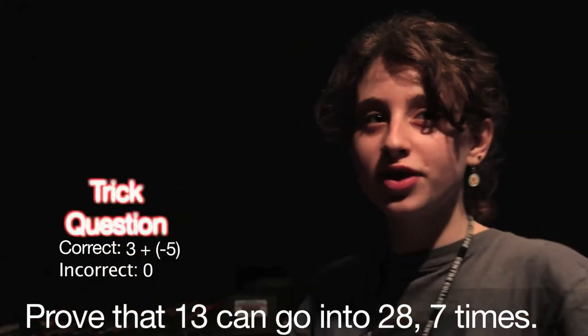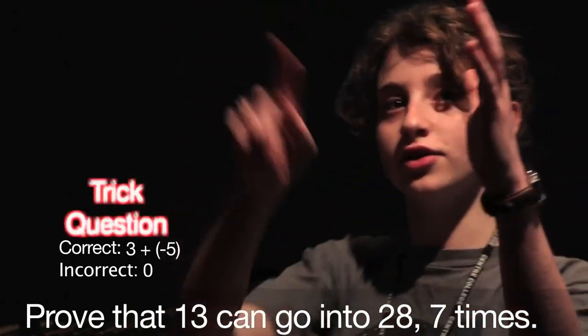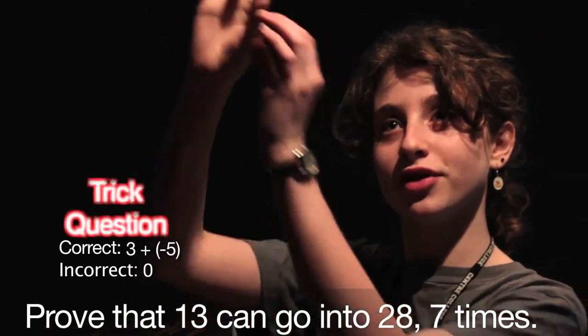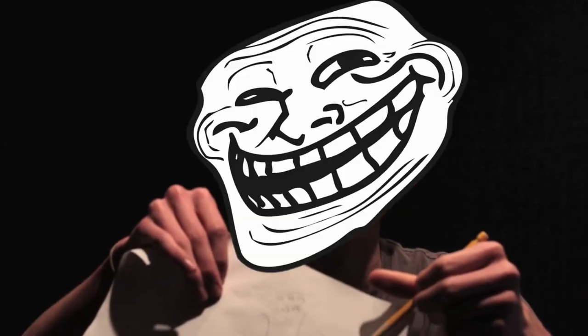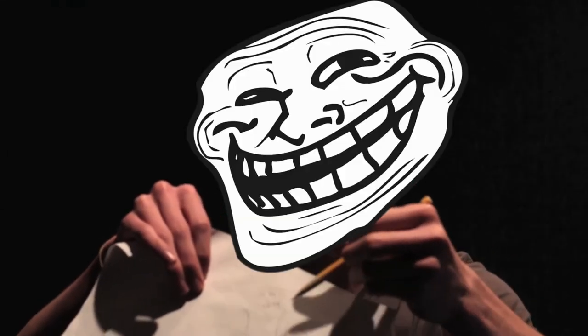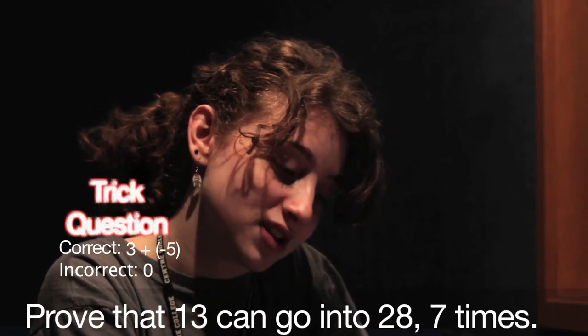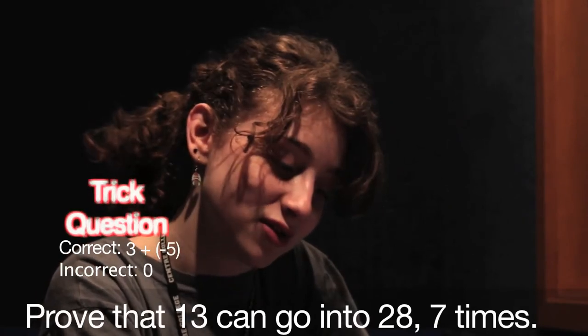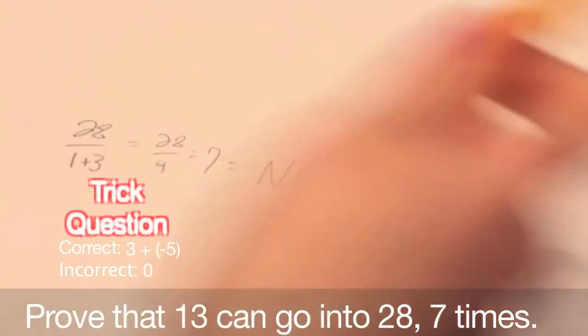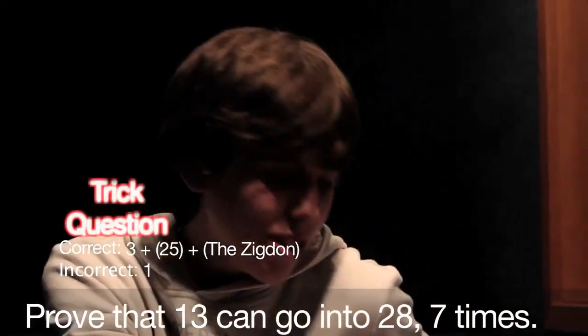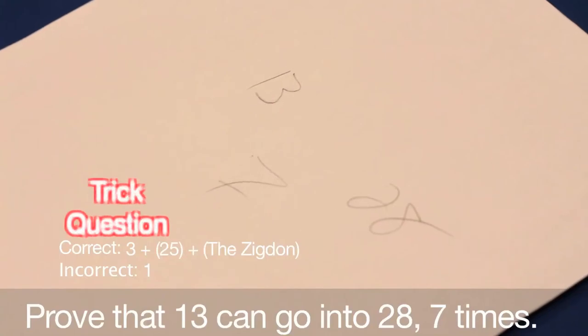Is this one of those stupid things where you, like, draw like a huge twenty-eight and like write the number thirteen really tiny in it? Oh, okay. Twenty-eight over one plus three. And then one plus three is four. But that's not real math. I hate you all. Why would you do this thing? The laws of math do not apply. Dude, I don't know. I give up.